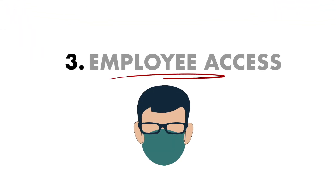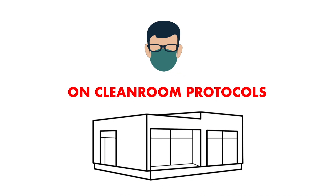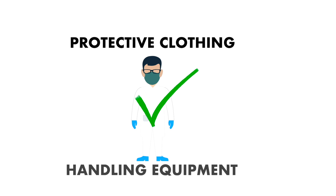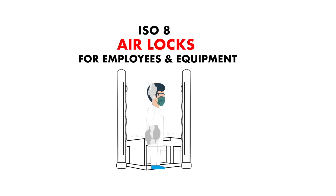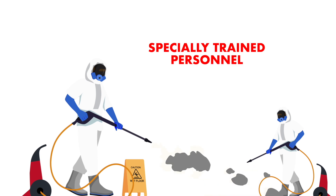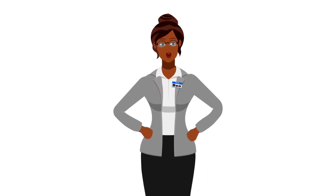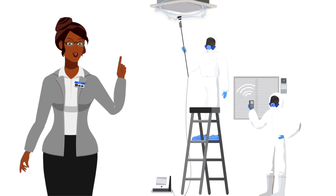3. Employee access. Since humans are the biggest culprits for bringing contaminants into a clean room, it is essential to train all personnel on clean room protocols. Employees should know the proper procedures for entering and exiting the clean room, protective clothing, and handling equipment. Clean rooms classified as ISO 8 or cleaner will need airlocks for employees and equipment to transition to and from the space. Clean rooms should only be cleaned by specially trained personnel using approved cleaning solutions and equipment. The best way to ensure your clean room meets industry standards is to have it monitored by a trusted clean room performance testing contractor.